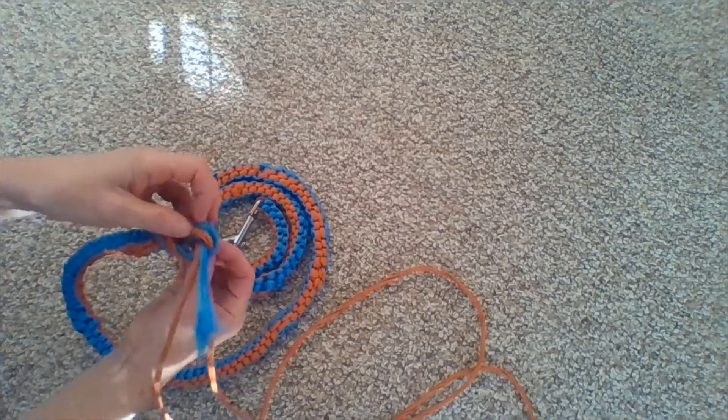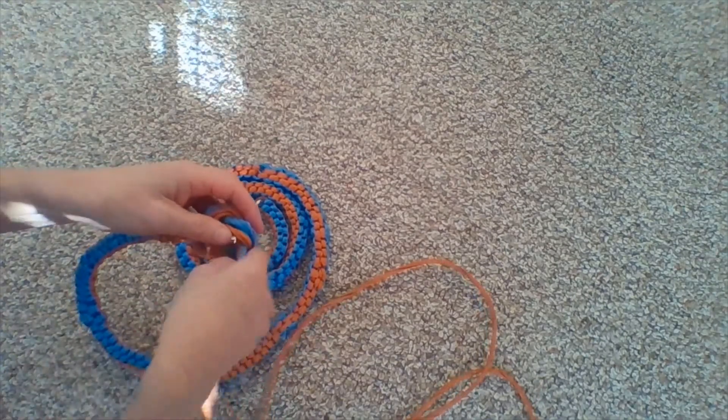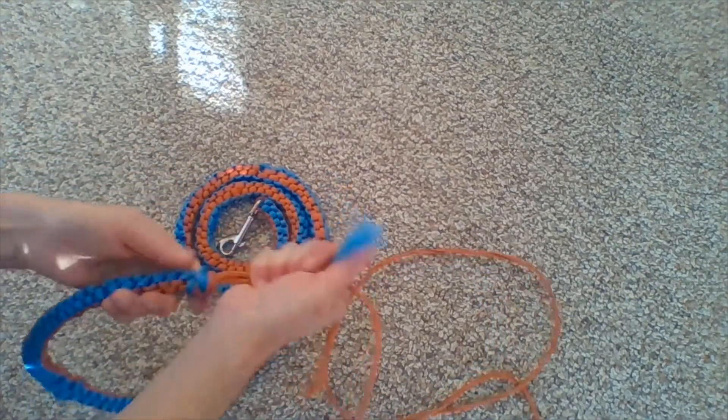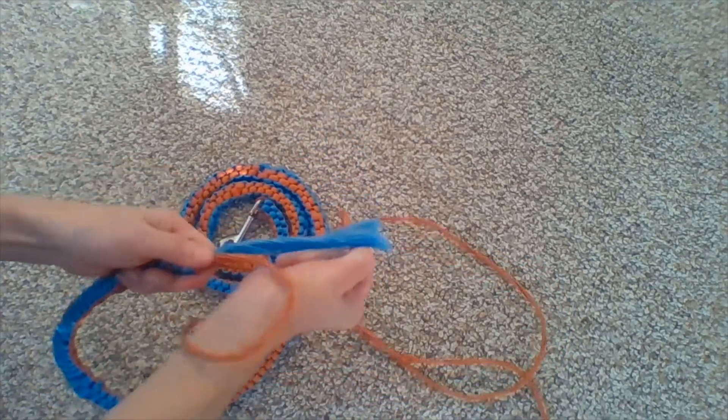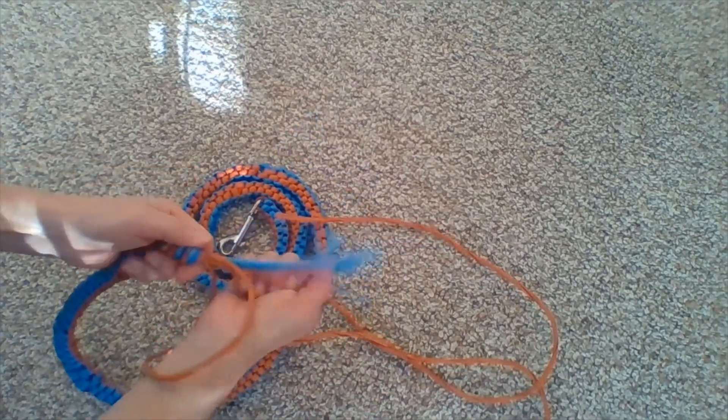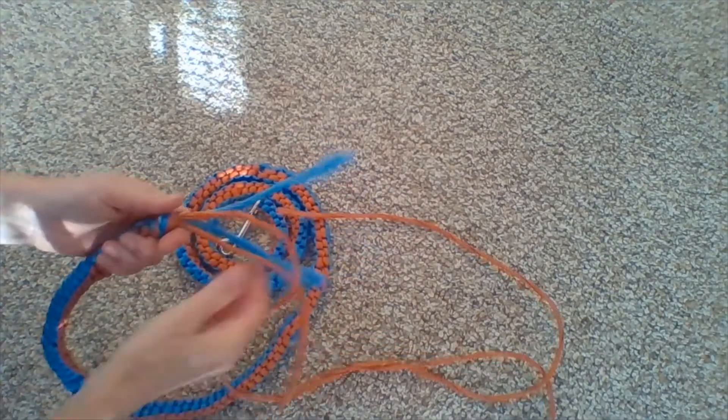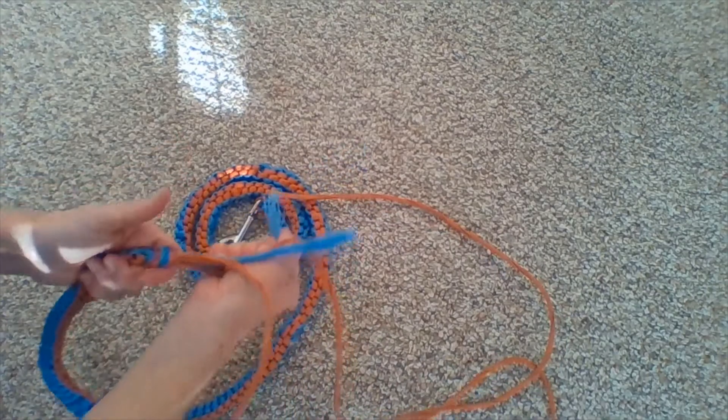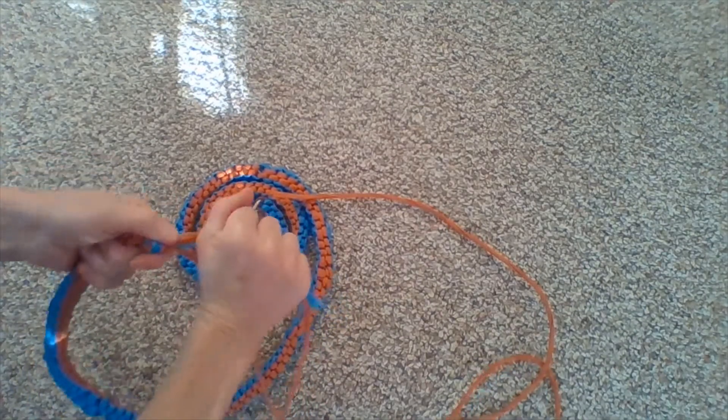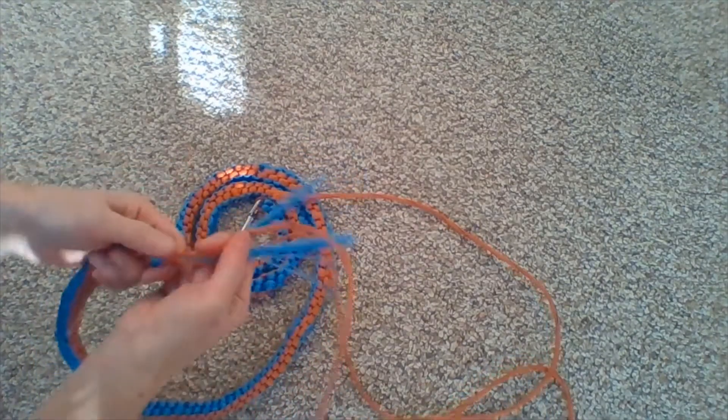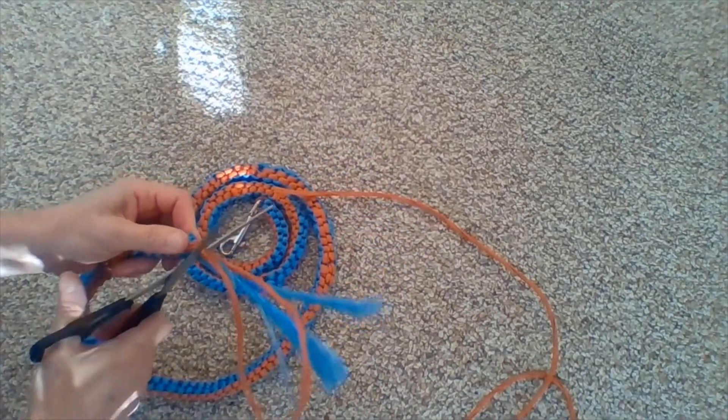And all the loose pieces as well. And then just pull it as tight as you can and give each individual strand a good tug. All right, that should do it. And then I'm just going to trim off these loose ends close to the knot.